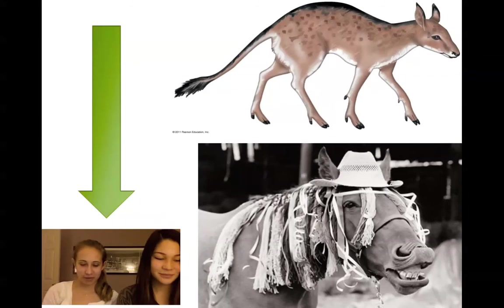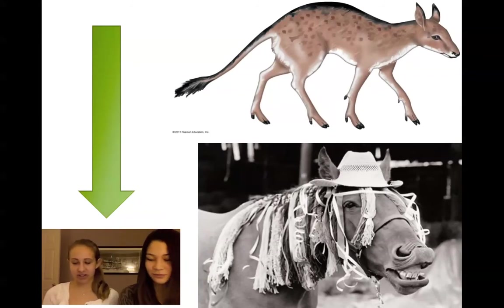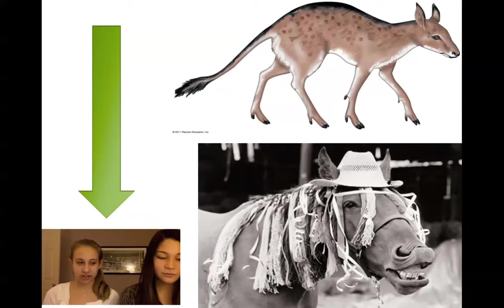Evolution is the change in genetic composition of a population from generation to generation. Darwin called evolution descent with modification.